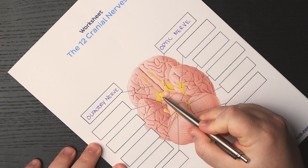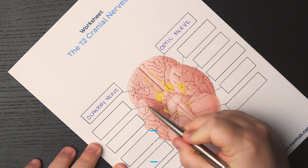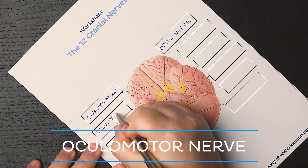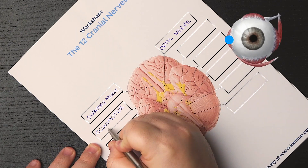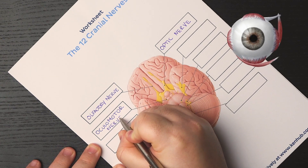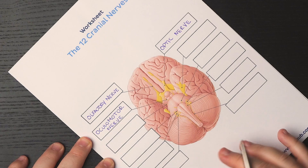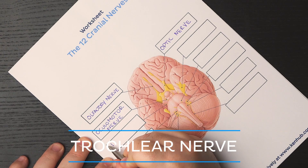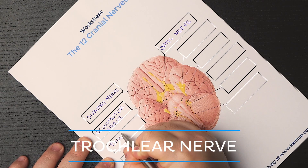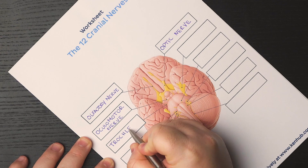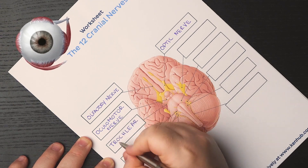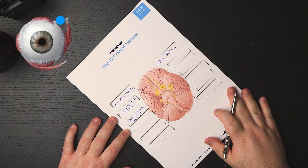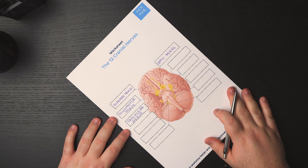Next up comes cranial nerve 3, or the oculomotor nerve. As the name suggests, this nerve is the chief motor nerve supplying the eye. It enables eye movement, constriction of the pupil (or miosis), and lens accommodation. After that we have cranial nerve 4, or the trochlear nerve, coming from the posterior aspect of the midbrain. The trochlear nerve is a motor nerve that supplies one extraocular muscle — the superior oblique muscle — thus playing a role in eye movement.